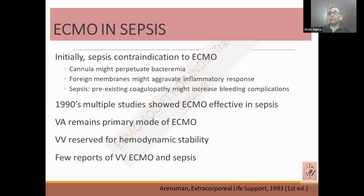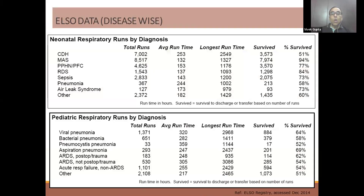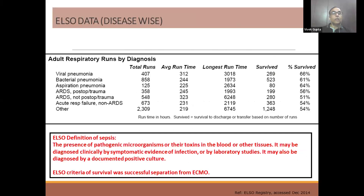VA ECMO was the primary mode of ECMO in both situations, especially for the neonatal population, while VV ECMO was restricted only for hemodynamically stable patients. This trend started in the neonatal age group with good survival in the late 90s and early 21st century, then gradually switched towards the pediatric population and finally to the adult population, with good survival in pediatric and even adult too, though not as good as for the neonatal population.